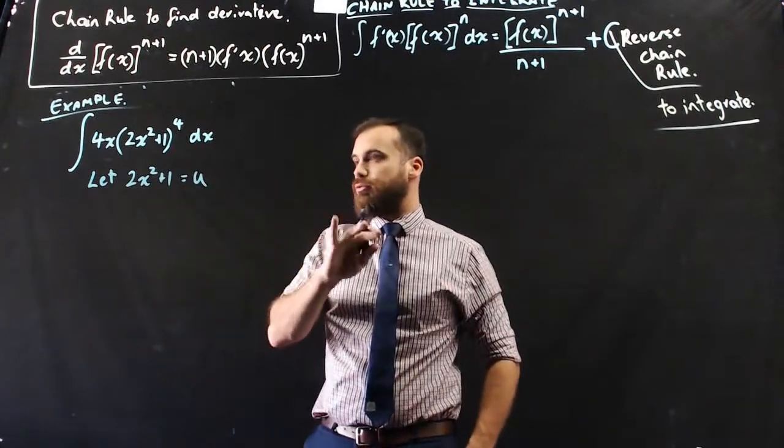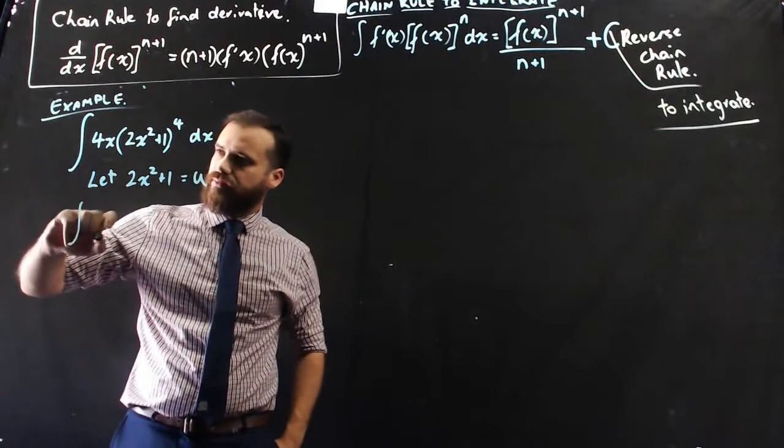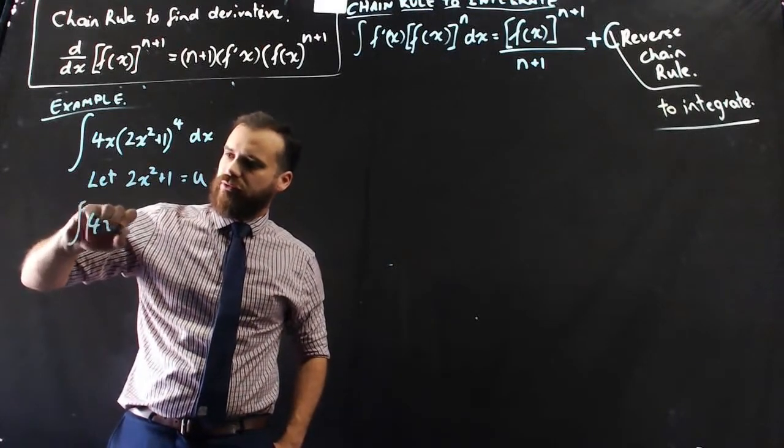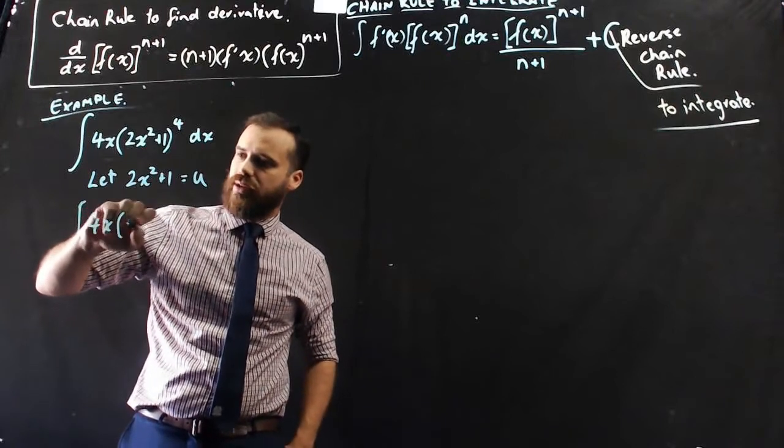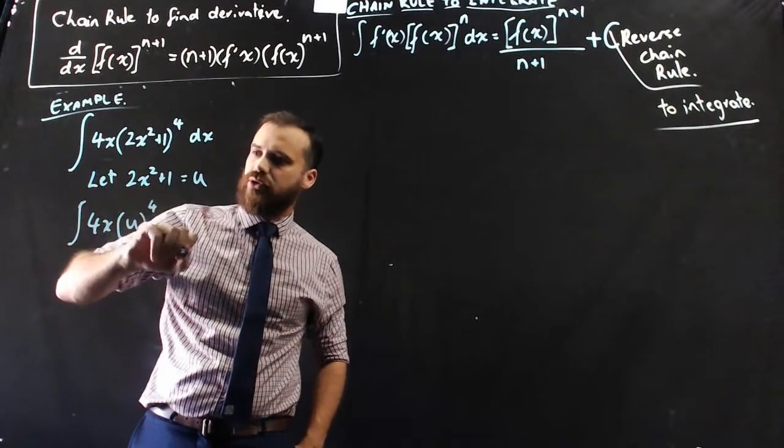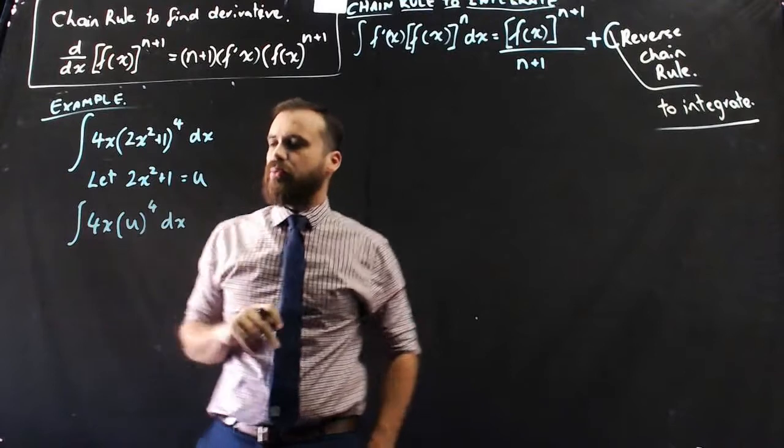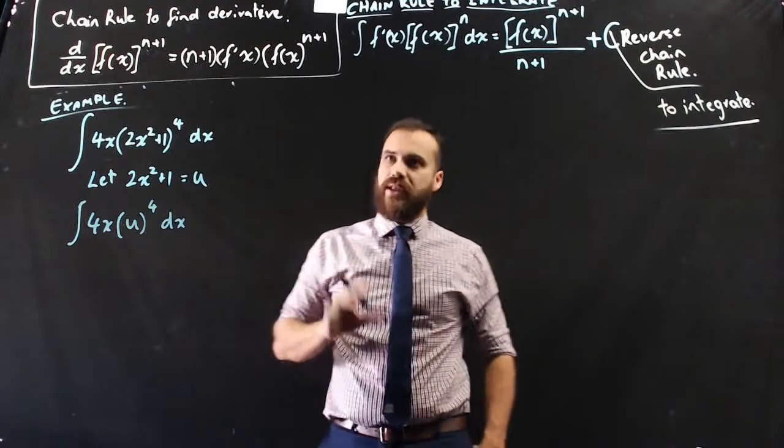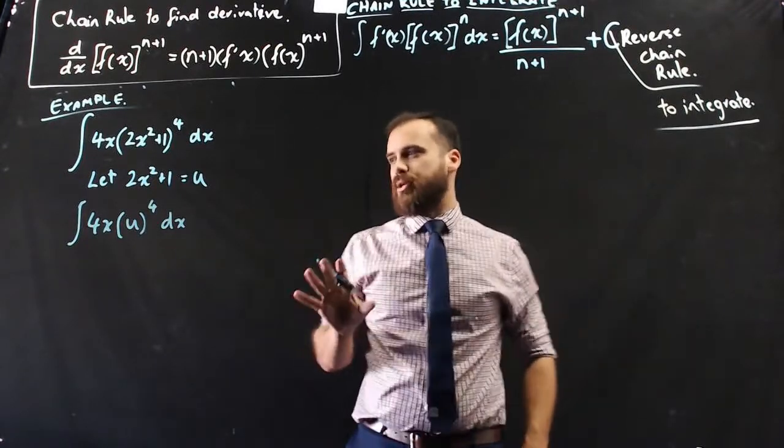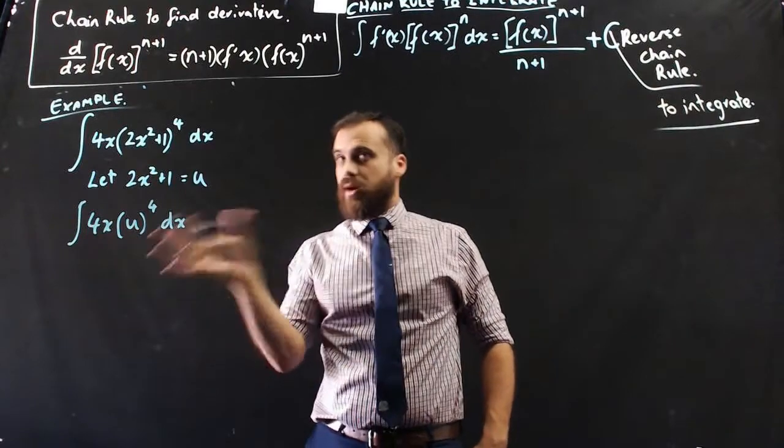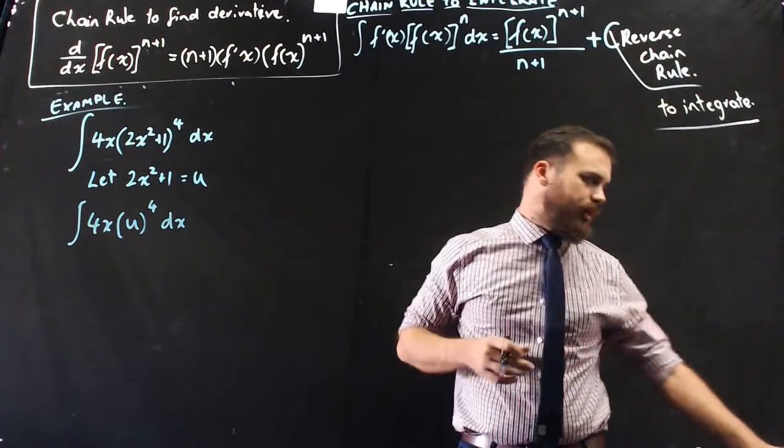let 2x squared plus 1 equal u. Alright, now I can rewrite that bit as the integral of 4x u to the 4 with respect to x. Now, small problem here, because I've got u's and x's, and we can't really work that way.